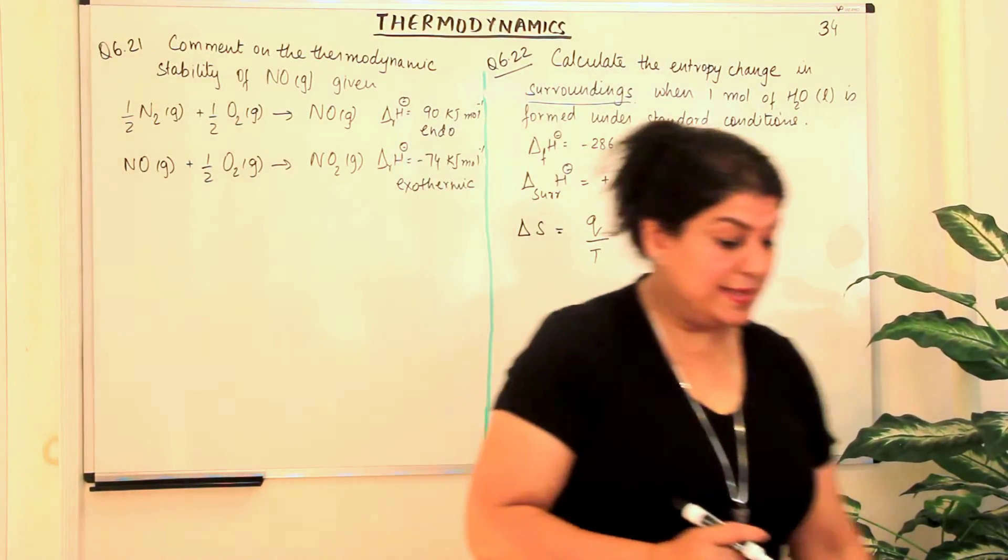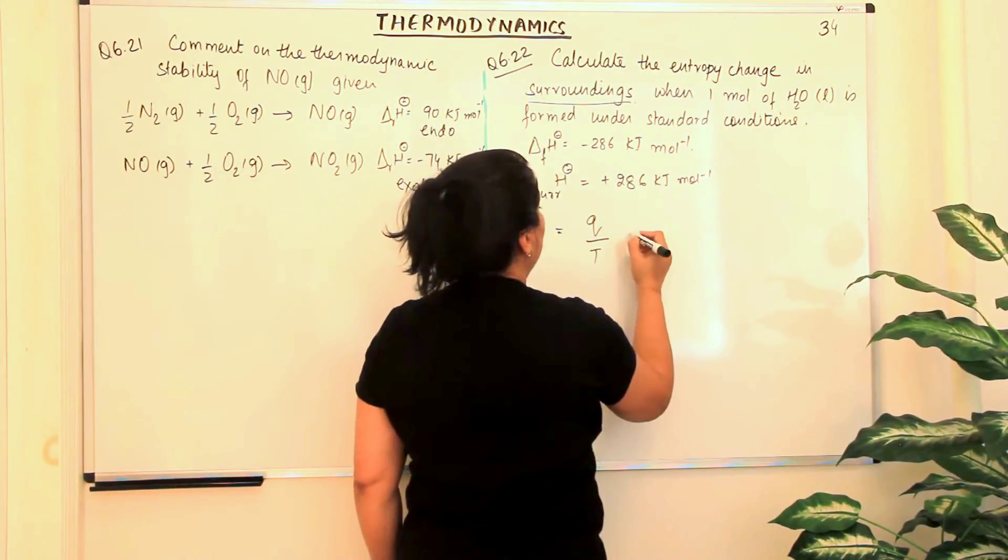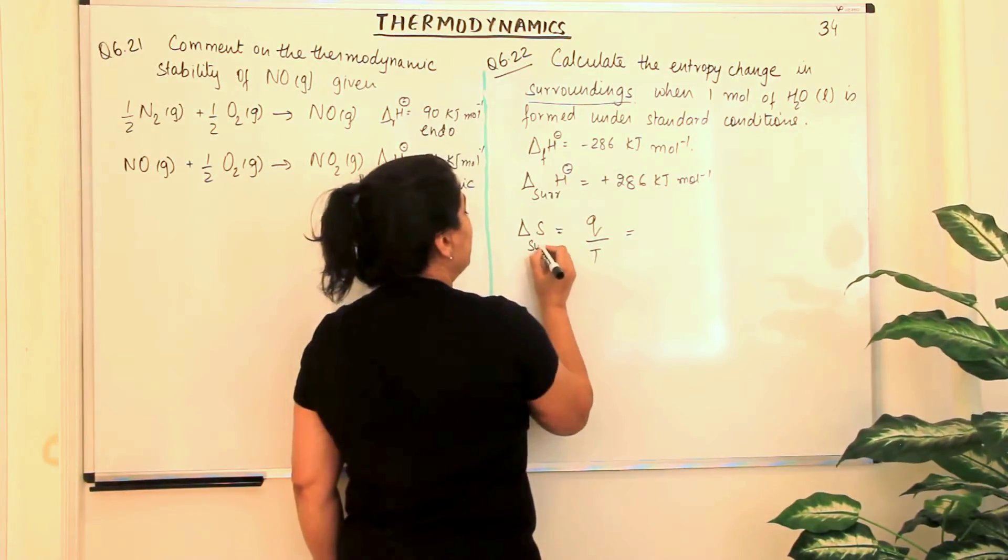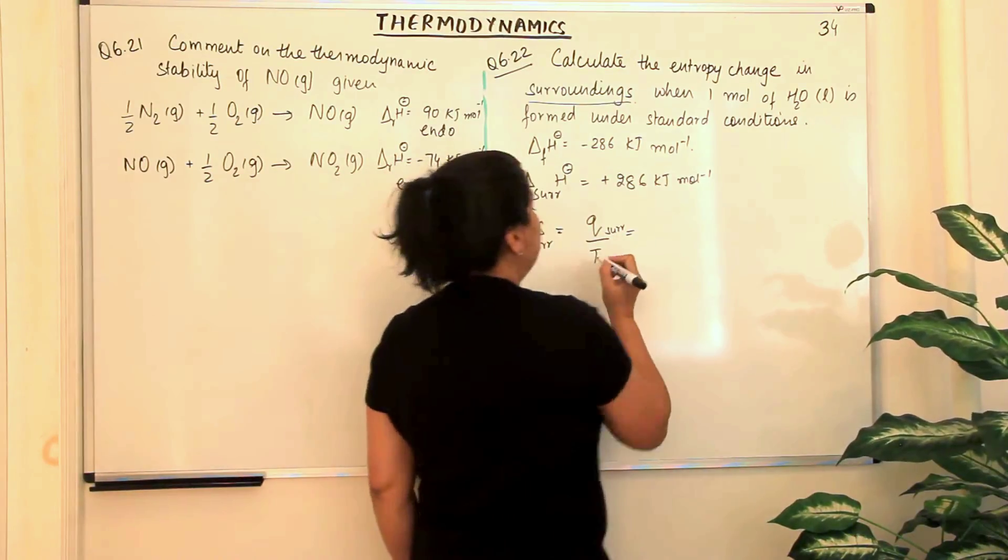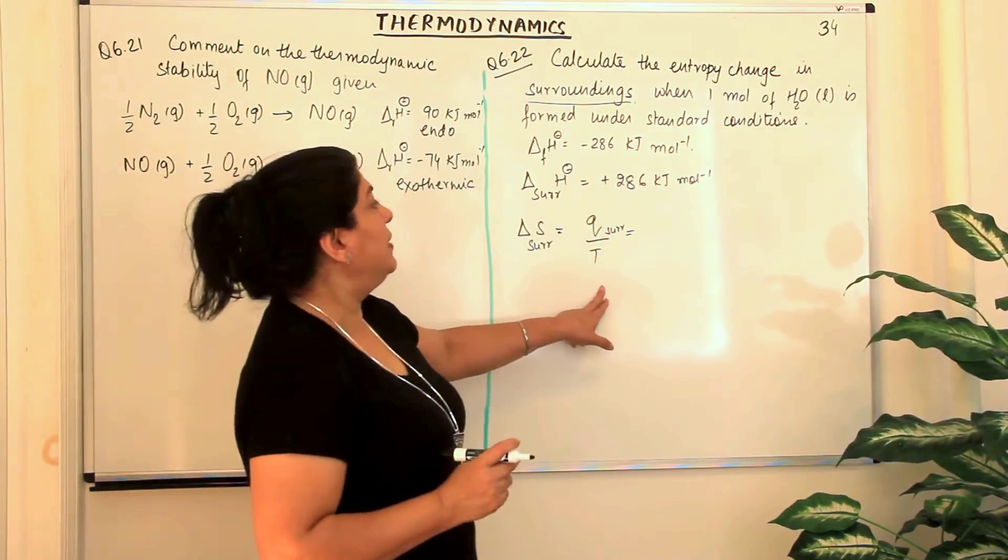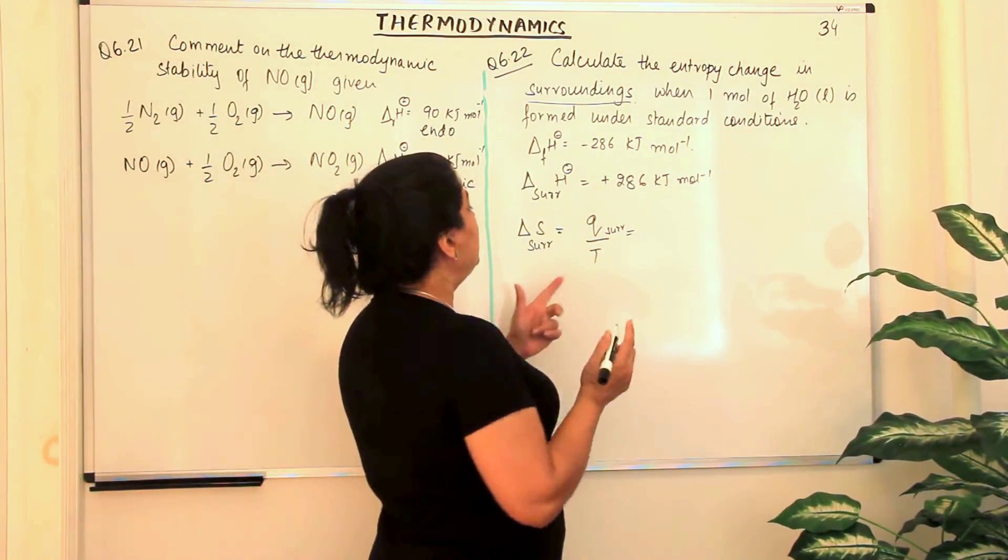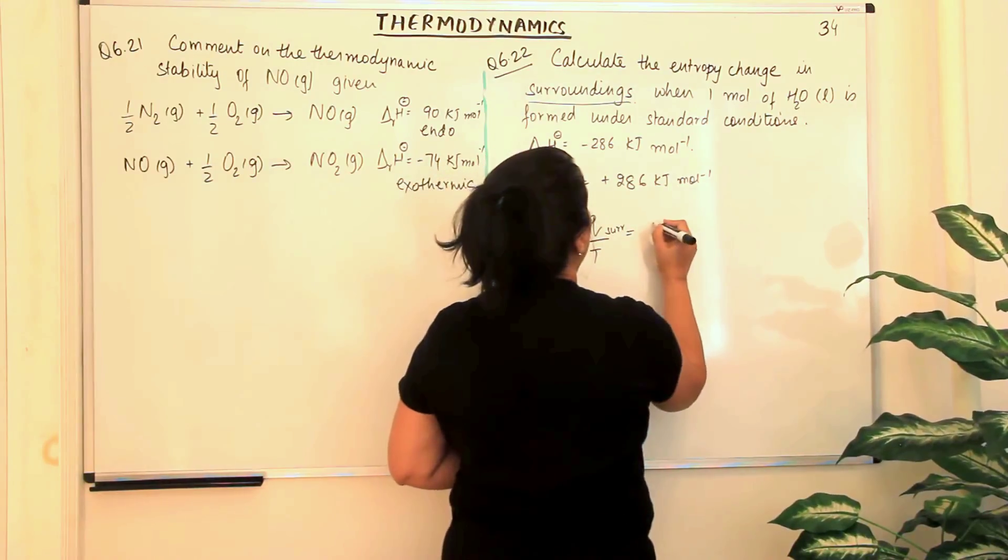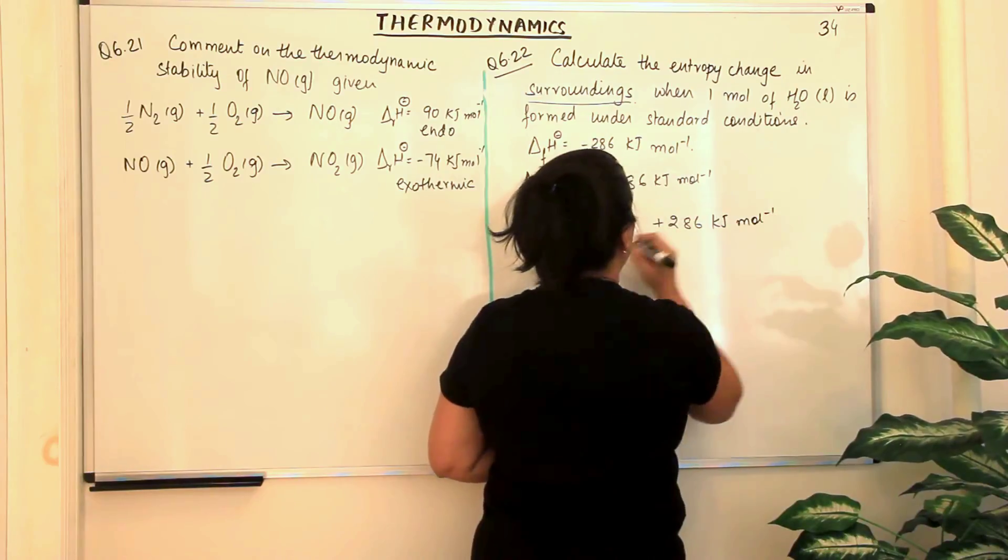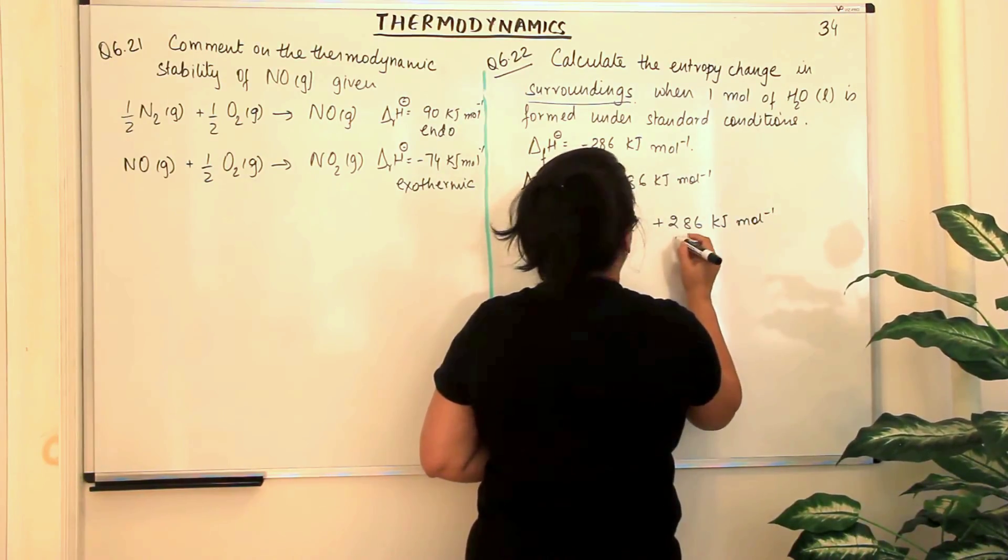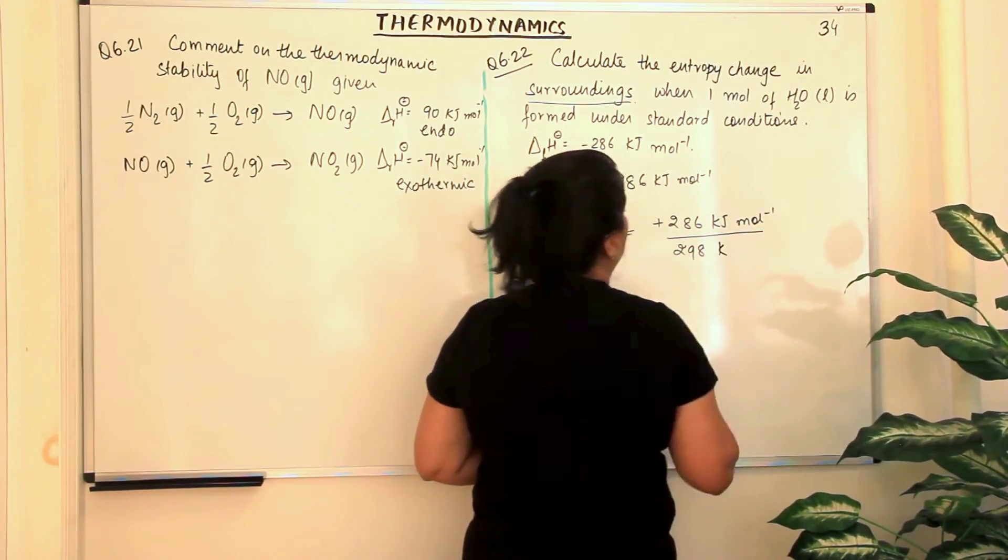What is delta S? It is Q upon T, and Q is nothing but delta H. So, since we are talking of delta S of the surroundings, Q of the surroundings and the temperature of the surroundings. Since we said the conditions are standard conditions, therefore the temperature is 298 Kelvin. And Q surroundings we just calculated, it is plus 286 kJ per mole, the delta H for the surrounding, and temperature is 298 Kelvin.